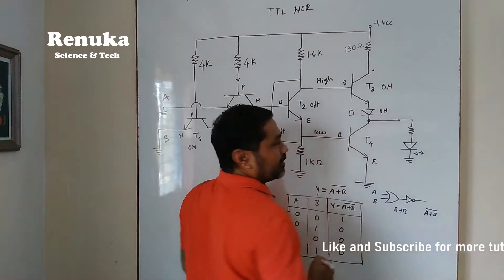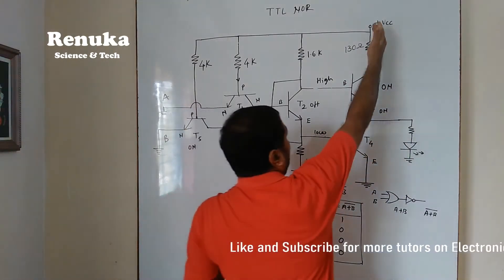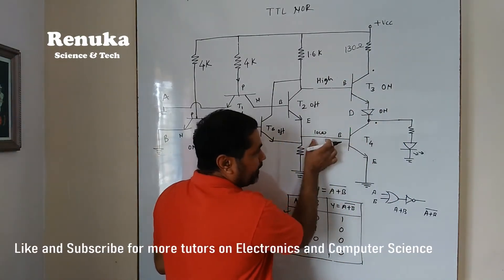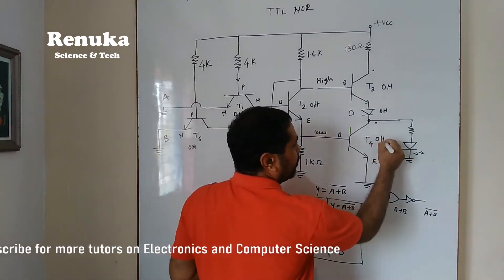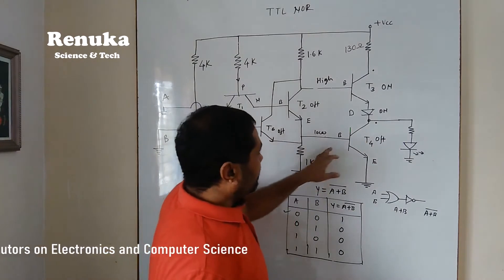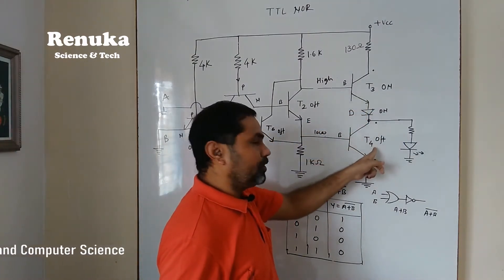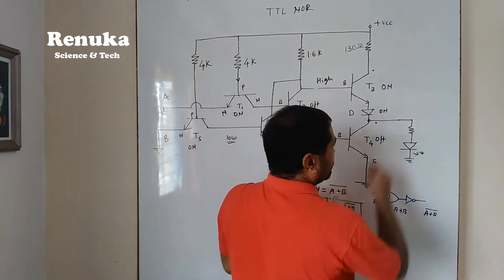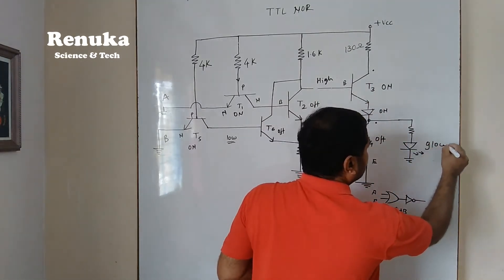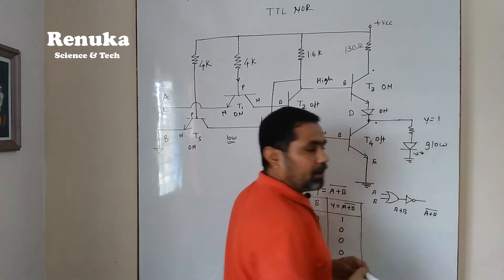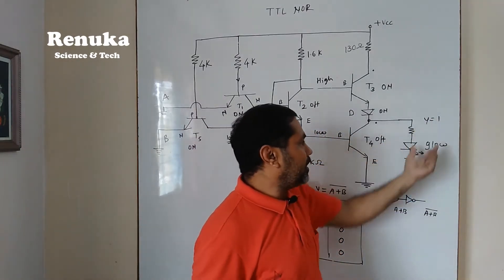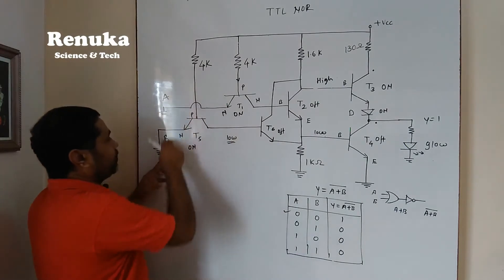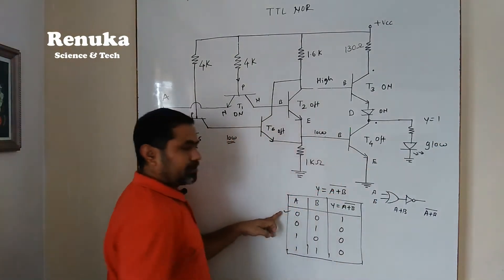With T3 ON, the low voltage at the base of transistor T4 will turn T4 OFF. If T4 is off, no current passes through T4, so the conduction path will be towards the LED. All current flows through the LED, so the LED glows, indicating a high output. Therefore Y=1 at the output because T4 is OFF. Starting from A=0, B=0, we are getting 1 at the output — first condition is satisfied.